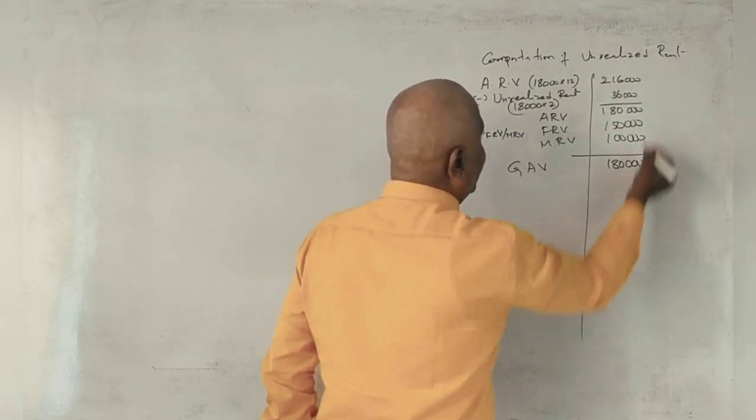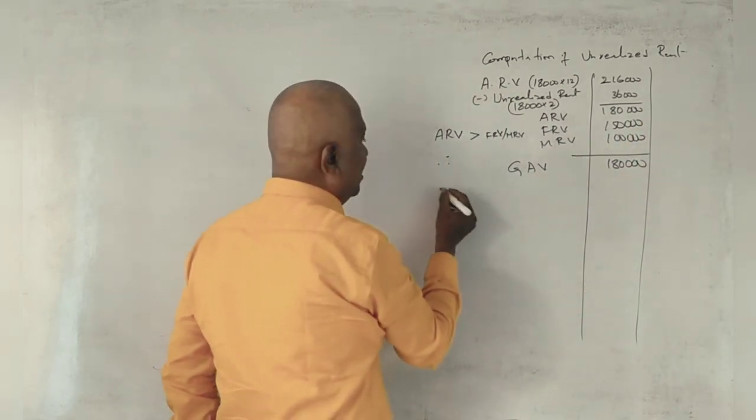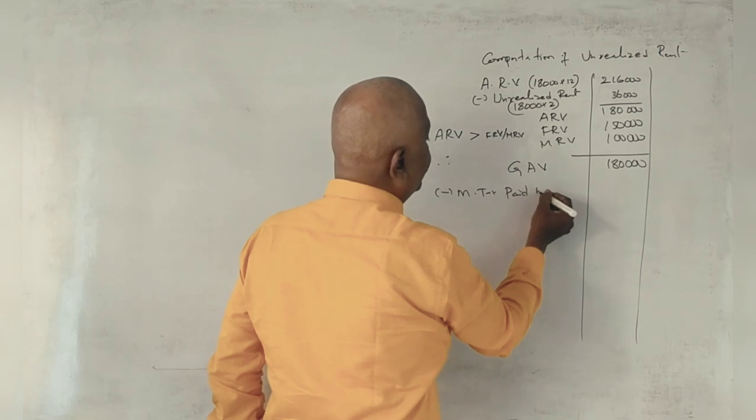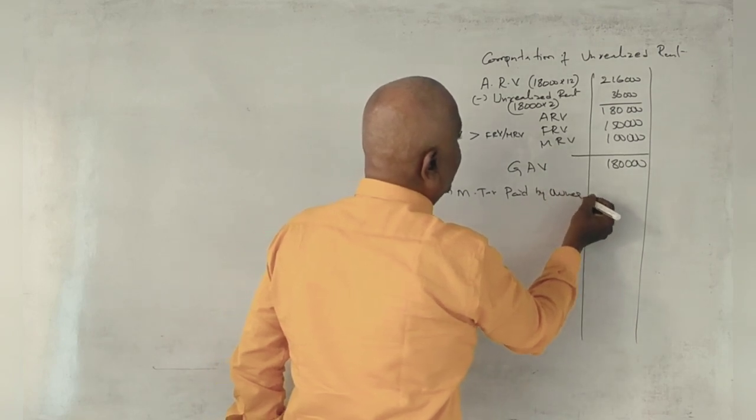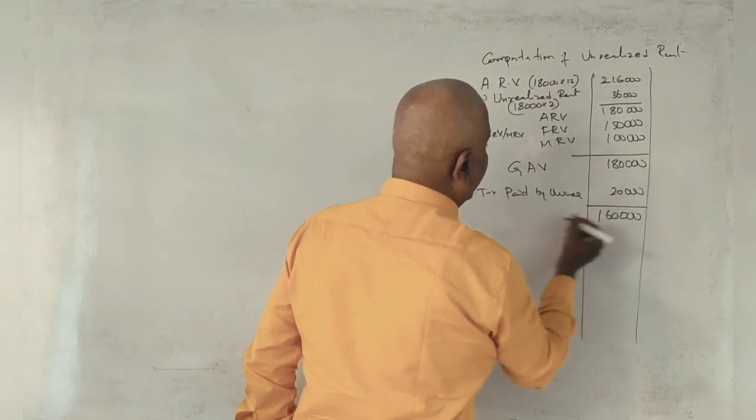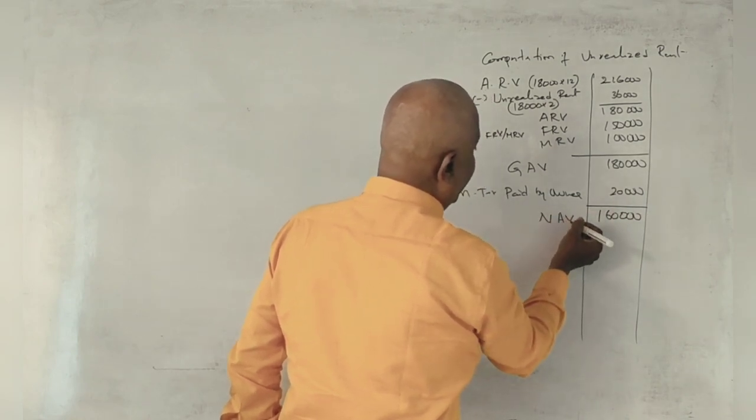So if you have municipal tax paid by owner, 20,000. So 1,60,000 NAV. That's right.